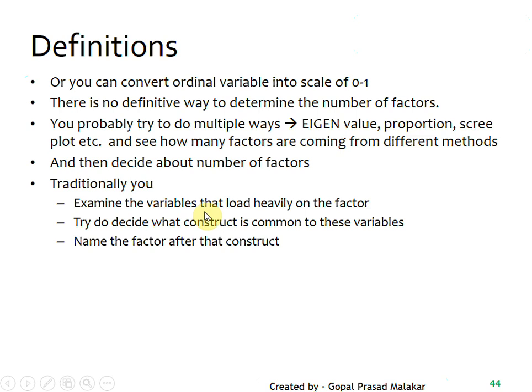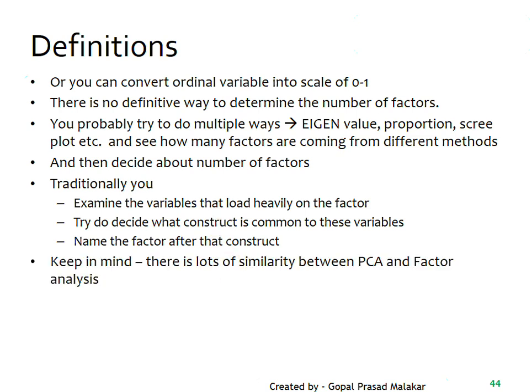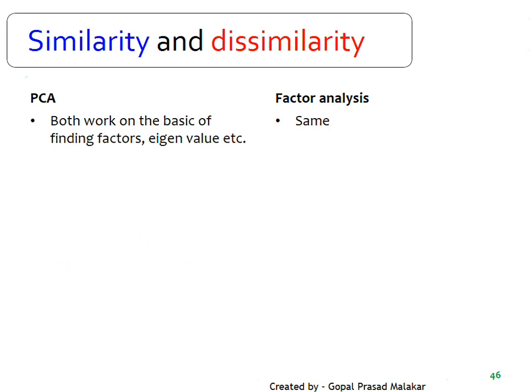You'll understand this better once I show you with an example. Keep in mind there is a lot of similarity between PCA and factor analysis, but their intent is different — one is about creating artificial variables, while the other is about finding latent variables. You'll understand it better when you see them side by side.